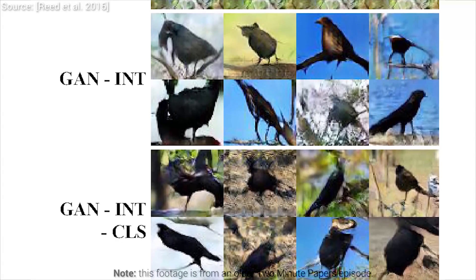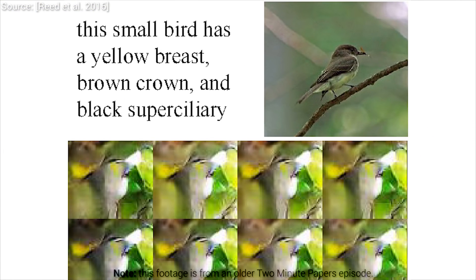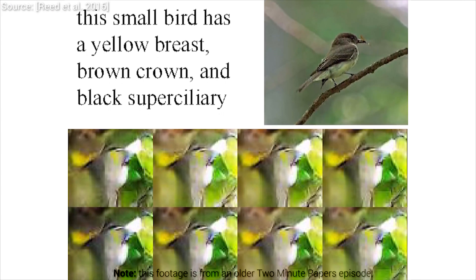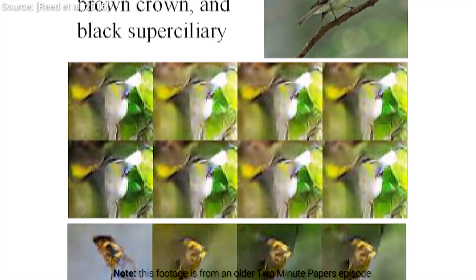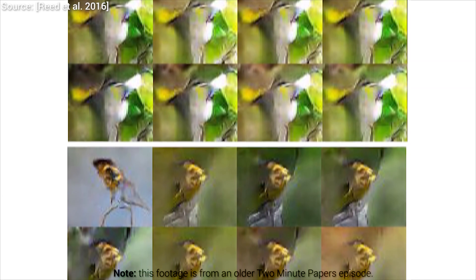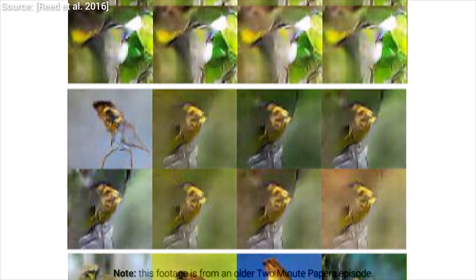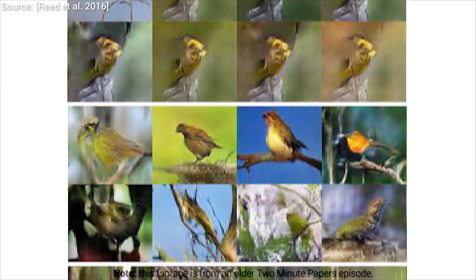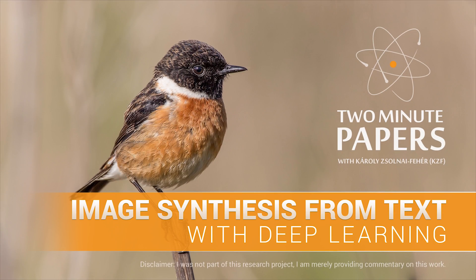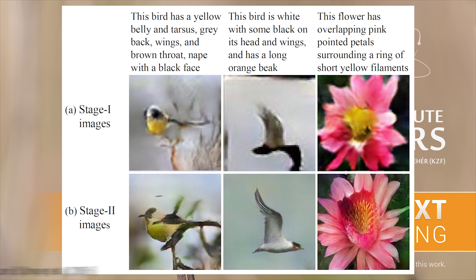This work is based on a generative adversarial network. What does this mean exactly? This means that we have two neural networks that race each other, where one tries to generate more and more real-looking animations, and passes it over to the other that learns to tell real footage from fake ones. The first we call the generator network, and the second is the discriminator network. They try to outperform each other, and this rivalry goes on for quite a while and improves the quality of output for both neural networks — hence the name Generative Adversarial Networks.